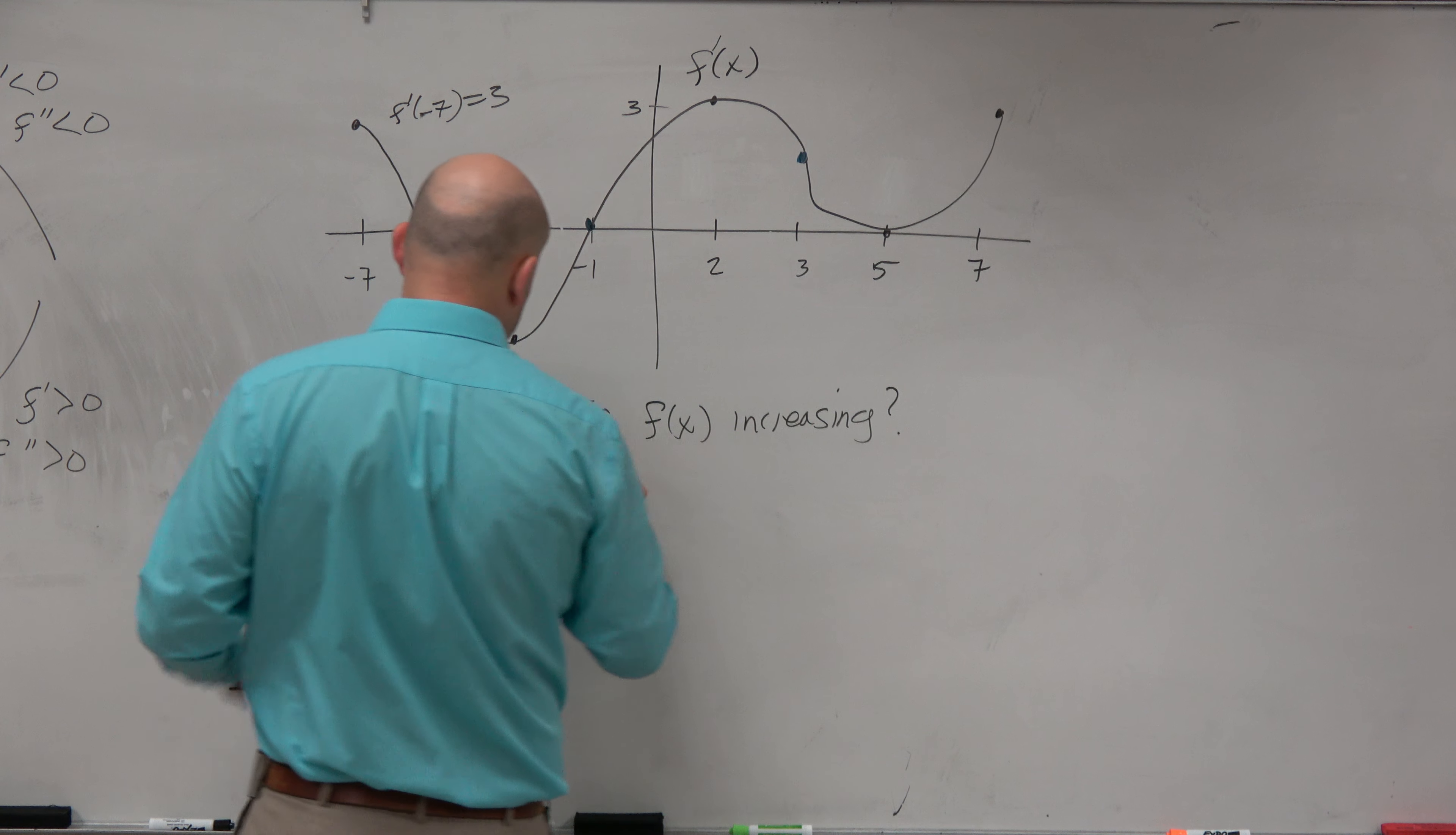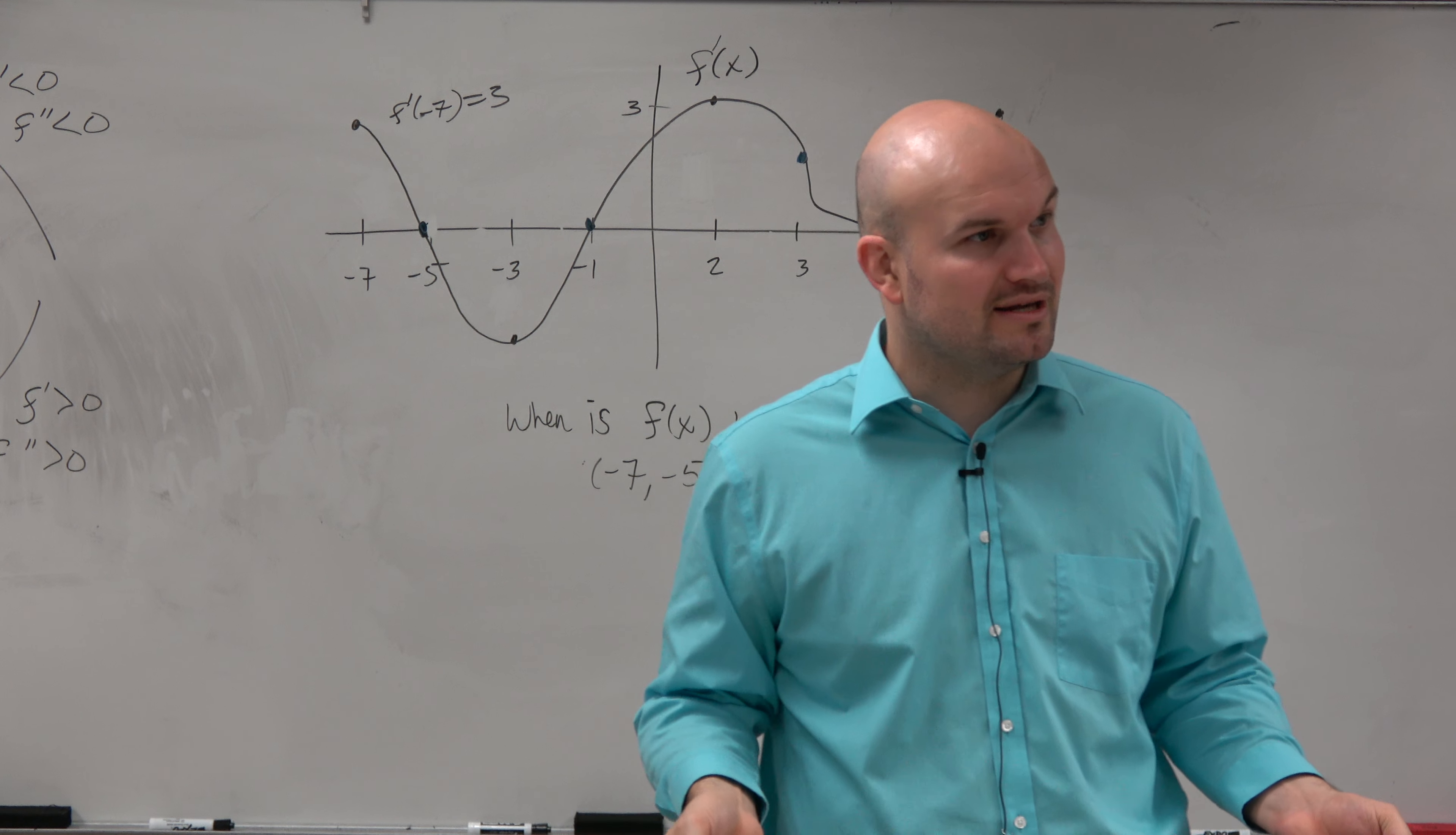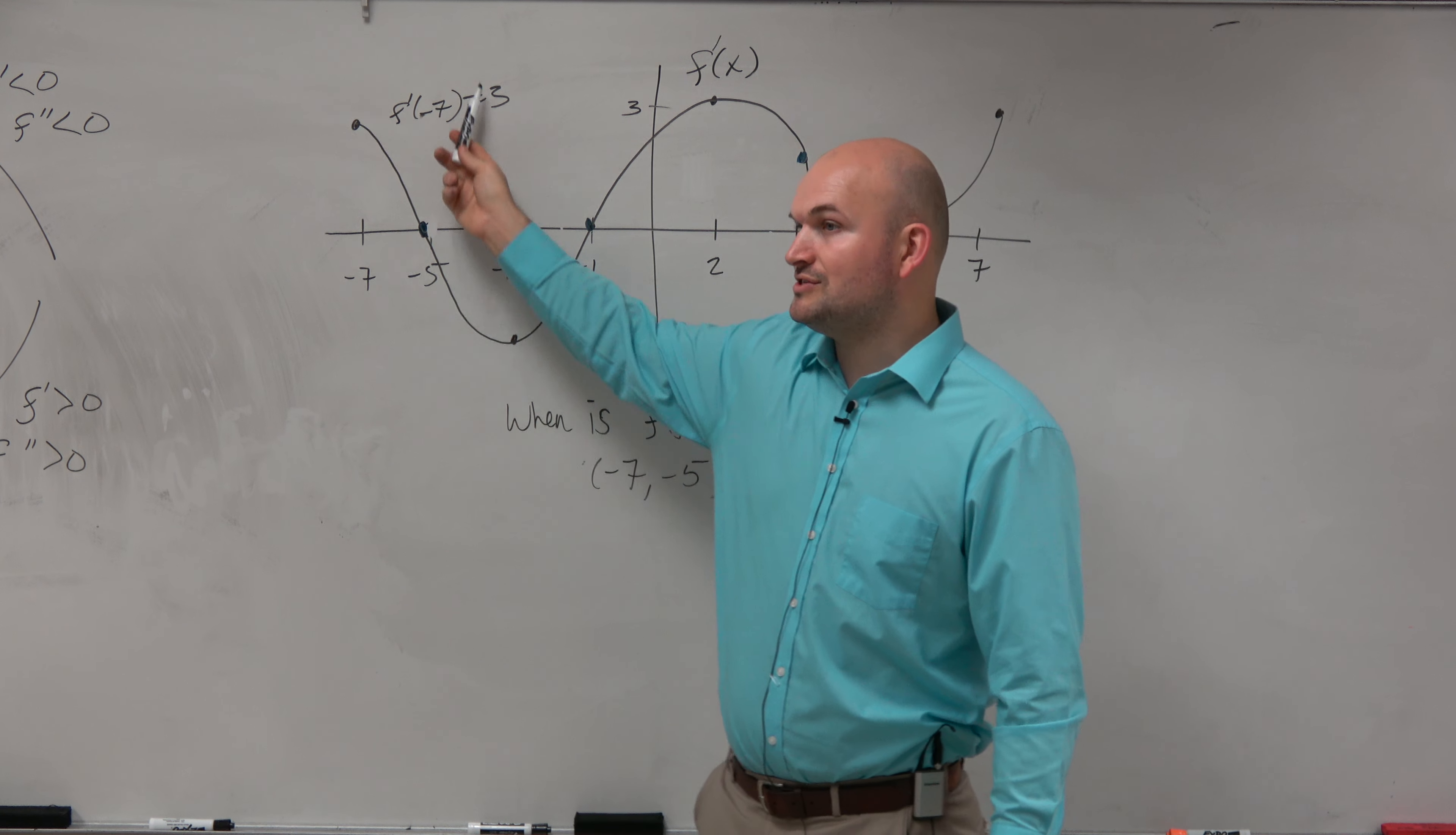So therefore, on the interval from negative 7 to negative 5, we can say that the graph is increasing because the slope of f of x is positive. How do we know the slope of f of x is positive? All positive values. Remember, this is f prime. All positive values.